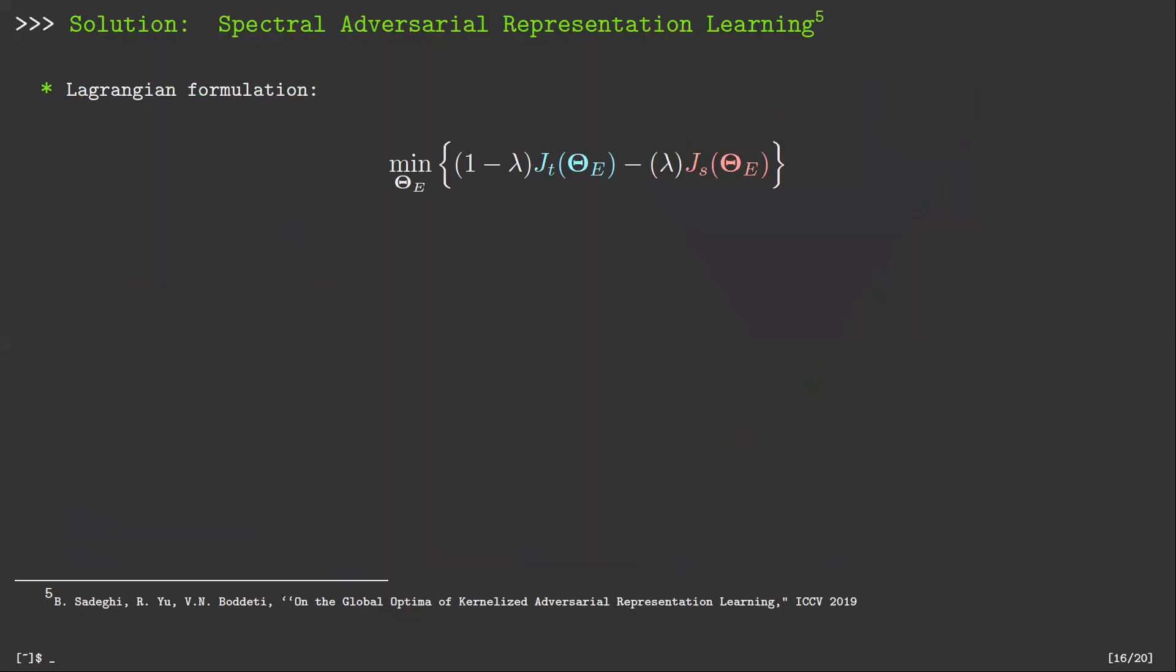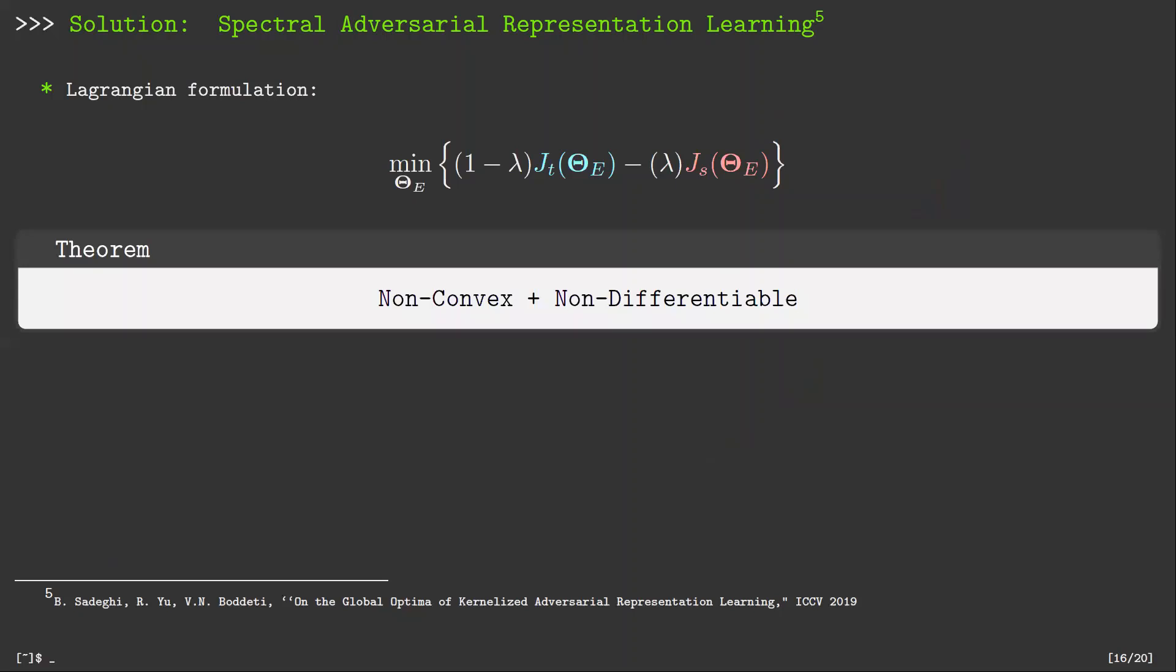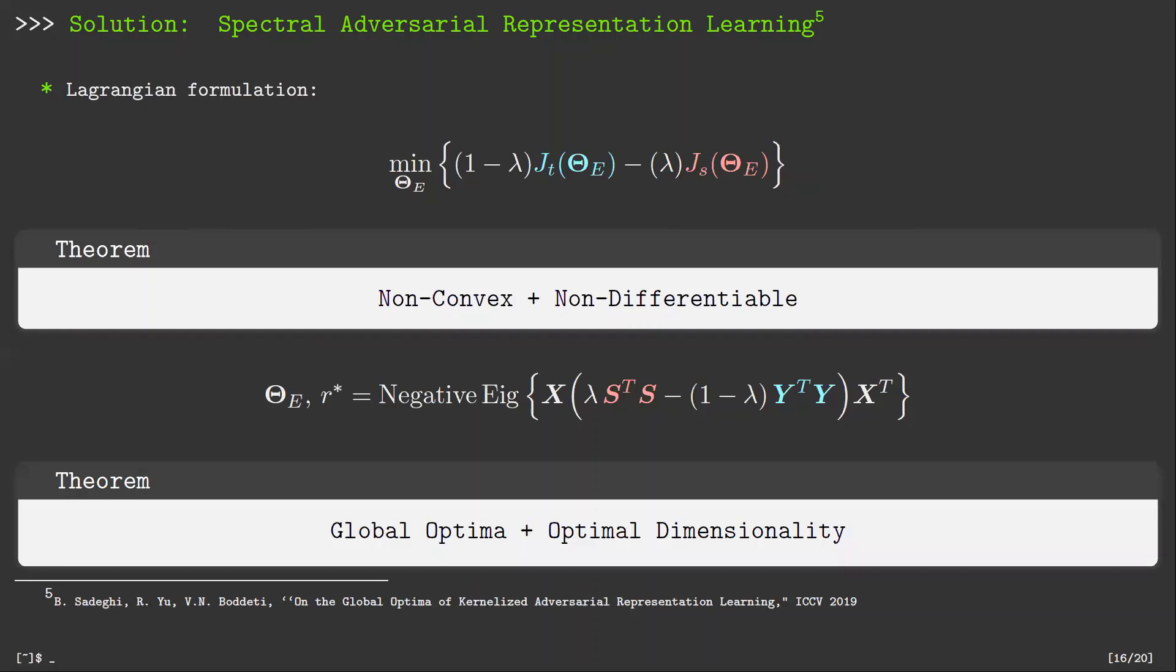Instead of solving the previously mentioned constraint optimization problem, this unconstrained Lagrangian version was solved instead. The Lagrangian version is also non-convex and non-differentiable. The proof is provided in the paper given in the footnote. Furthermore, the optimal embedding dimensionality is the number of negative eigenvalues of convex combination of target and sensitive covariance matrices. The global optimal encoder is any matrix whose column rank is the span of associated eigenvectors.